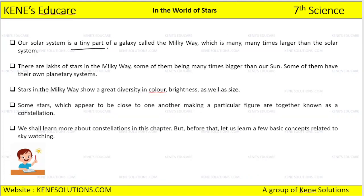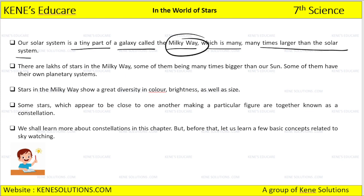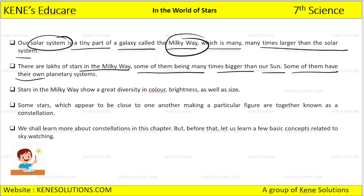Our solar system is a tiny part of the galaxy called the Milky Way, which is many, many times larger than the solar system. The solar system is a small part of the Milky Way. There are lakhs of stars in the Milky Way, some of them being many times bigger than our sun, and some of them have their own planetary system.